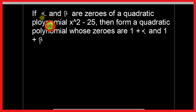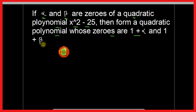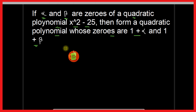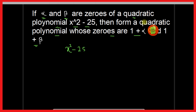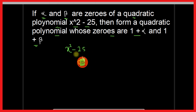The question is: if alpha and beta are the zeros of the quadratic polynomial x squared minus 25, then form a quadratic polynomial whose zeros are 1 plus alpha and 1 plus beta. Here, the given polynomial is x squared minus 25, and alpha and beta are the zeros of this quadratic polynomial.